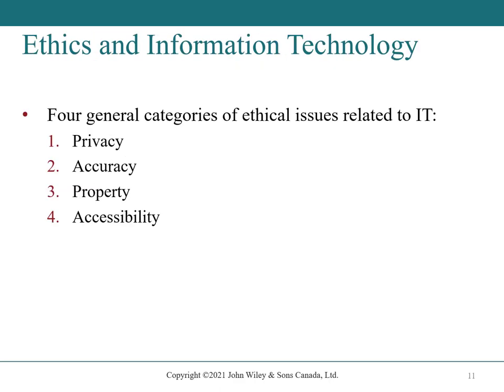Ethics and Information Technology. The four general categories of ethical issues related to IT are privacy, accuracy, property, and accessibility. Privacy issues concern collecting, storing, and disseminating information about individuals. Accuracy involves the authenticity, fidelity, and correctness of information collected and processed. Property issues involve who owns the information and what is its value. Accessibility issues revolve around who should have access and whether they should pay a fee.